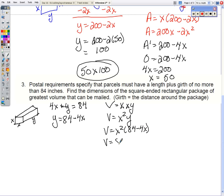Substitute it in here. Distribute my x squared. And now we need the derivative of the volume so we can maximize it. 84 times 2 is 168. 4 times 3 is 12. Reduce that exponent. And we're going to set it equal to 0.